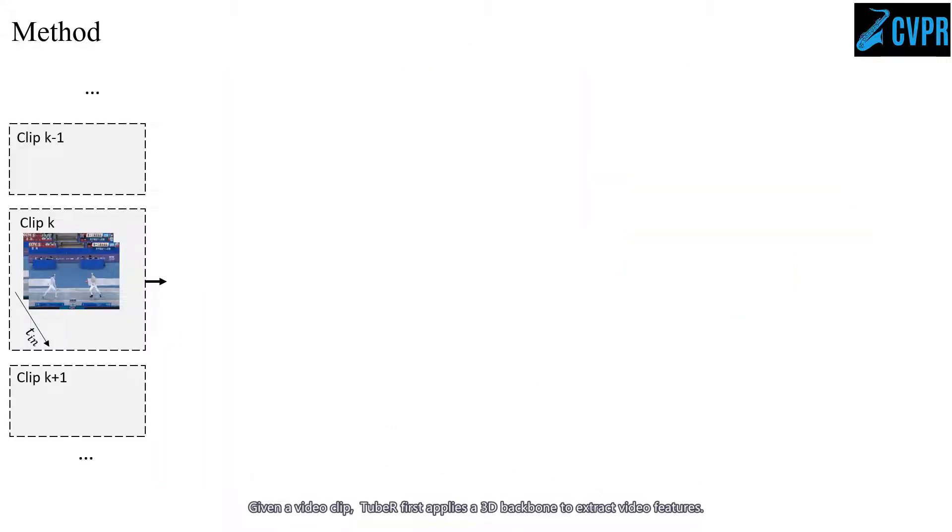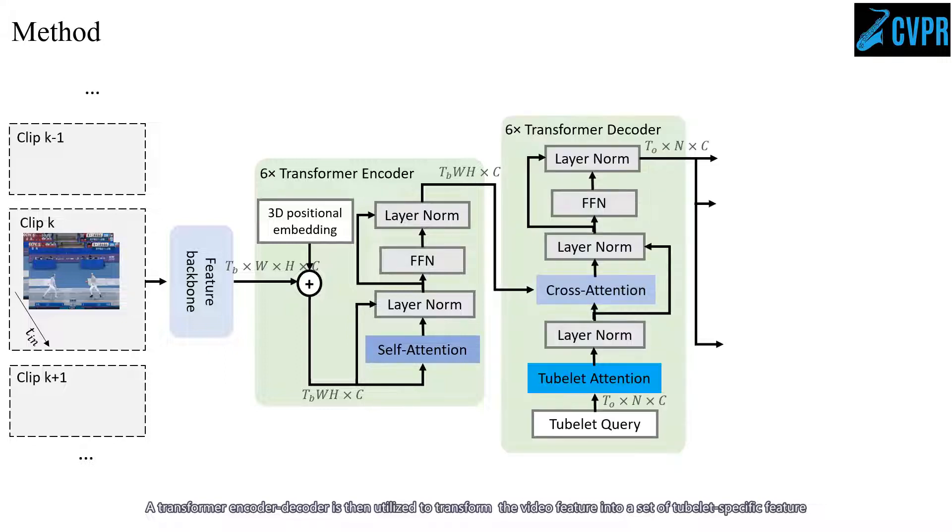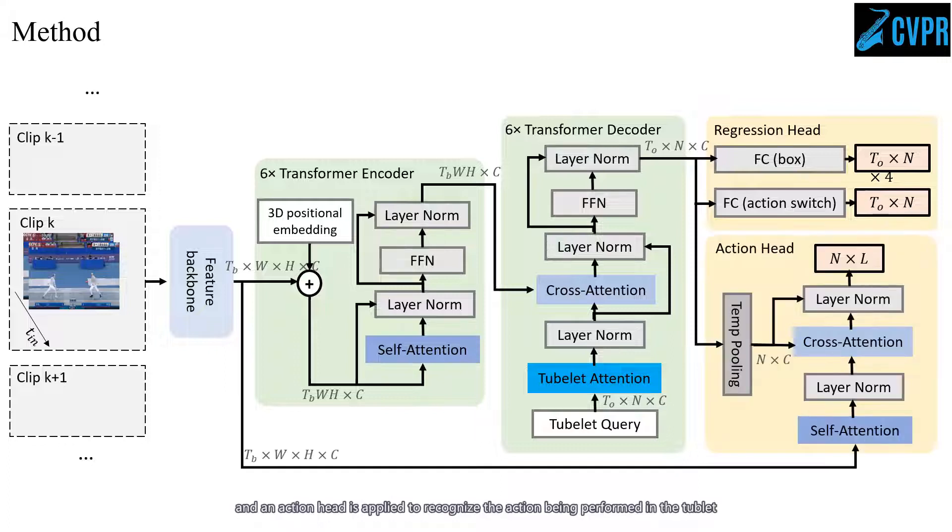Given a video clip, TubeR first applies a 3D backbone to extract video features. A transformer encoder-decoder is then utilized to transform the video features into a set of tubelet-specific features. From each tubelet-specific feature, a regression head predicts the bounding boxes in the action tubelet, and an action head recognizes the action being performed.